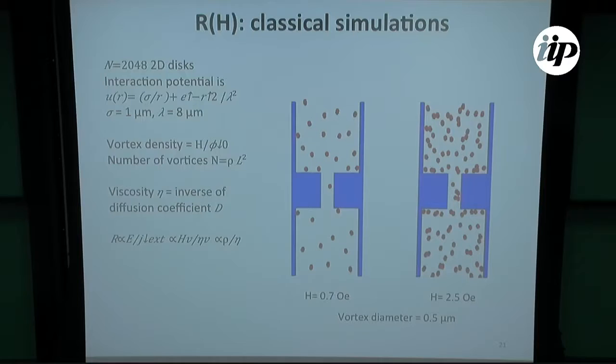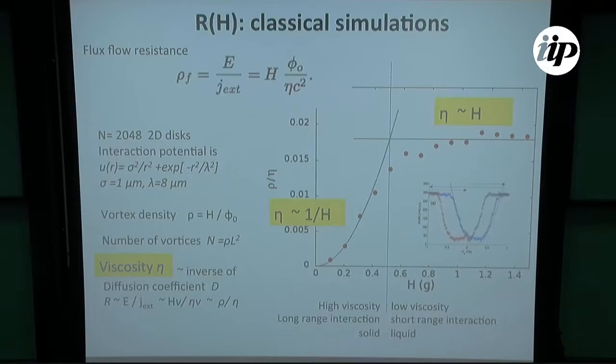This used to be a movie, but I don't know why it doesn't work. I can show you after if you like. What the outcome is, is that if you look at the diffusion coefficient of these disks when the density is very low, so the magnetic field is very low, this gives a viscosity that is one over eta, while on the contrary, for a higher density, the short-range force dominates, and you get the viscosity that is proportional to the density or to H.